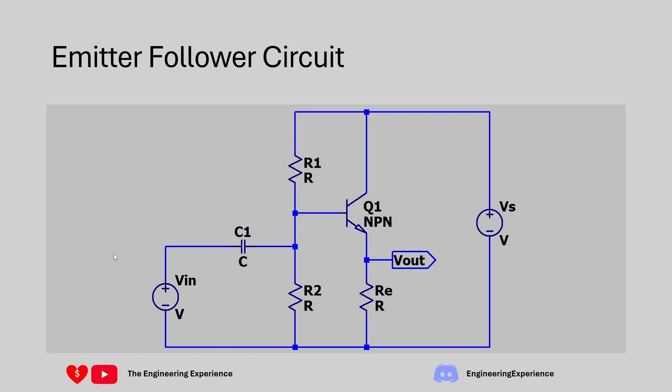Going from left to right we have our input source here, we have a capacitor and then a potential divider over here, we have a transistor and then we have a resistance on the emitter. The output voltage is obtained from the emitter of the NPN transistor or the top of the RE resistor on the diagram, and on the right hand side we have our power supply.